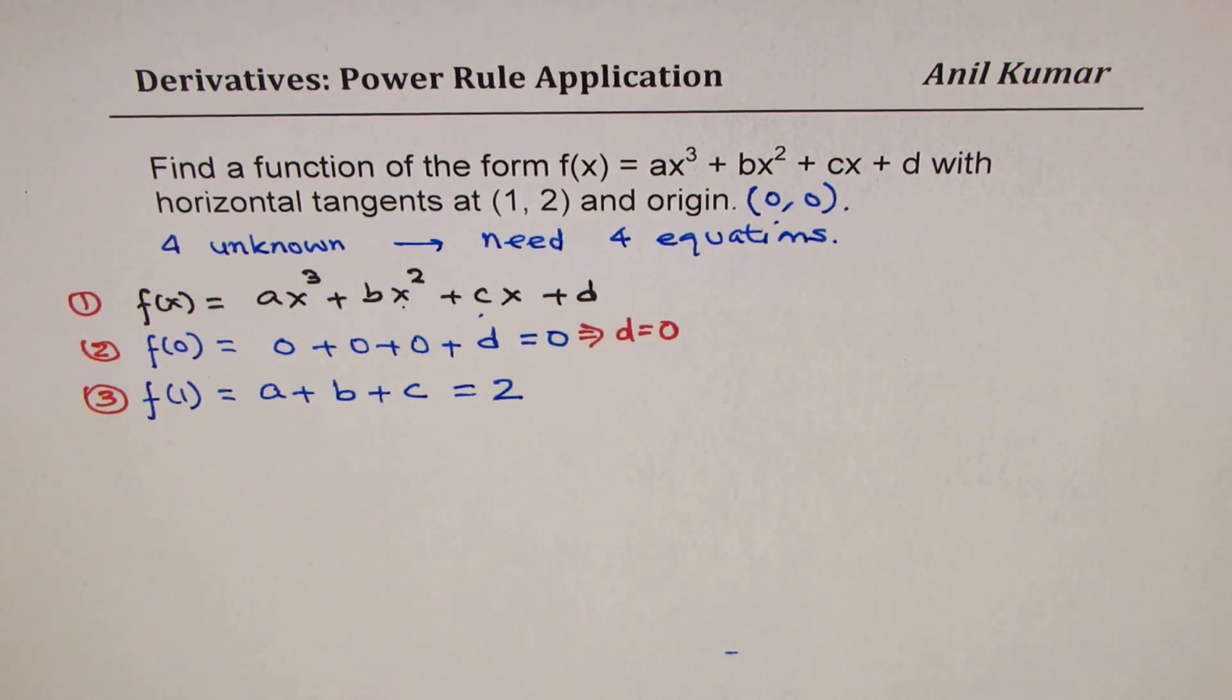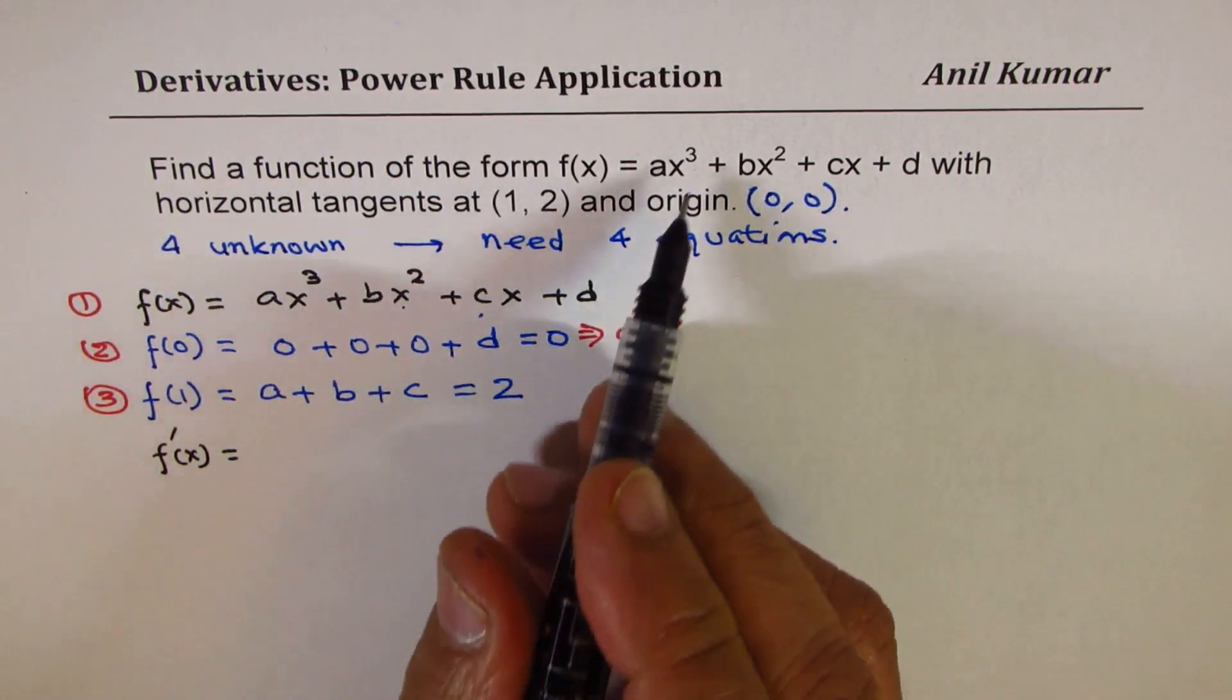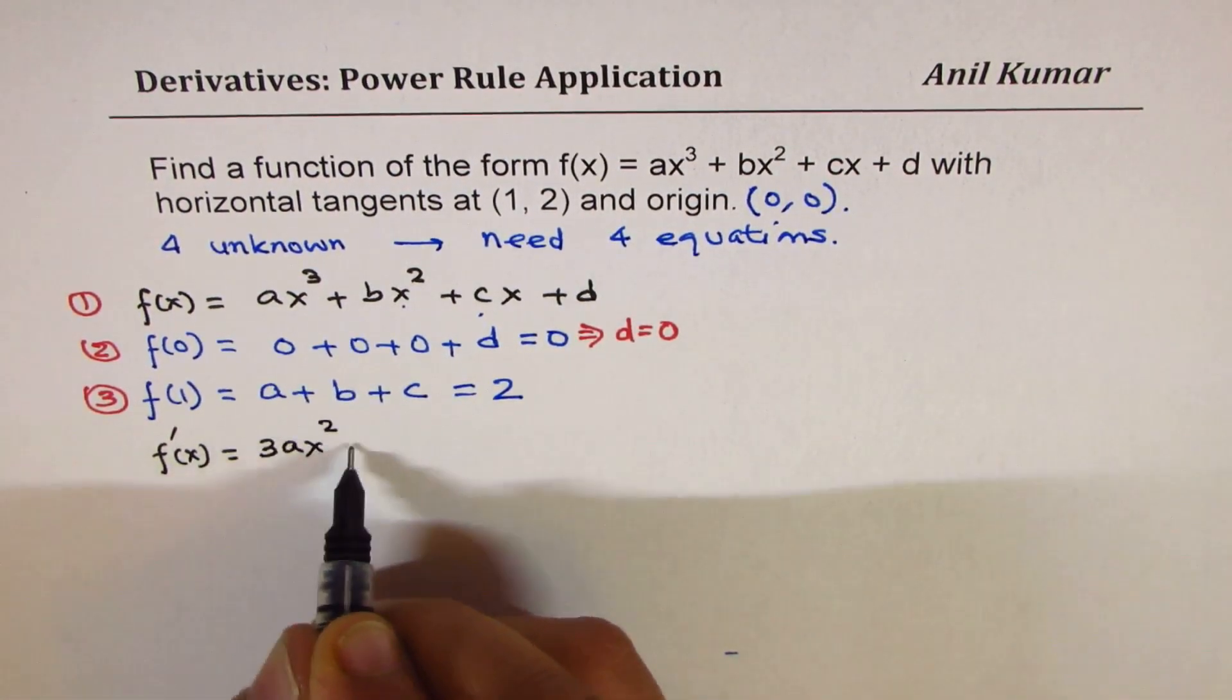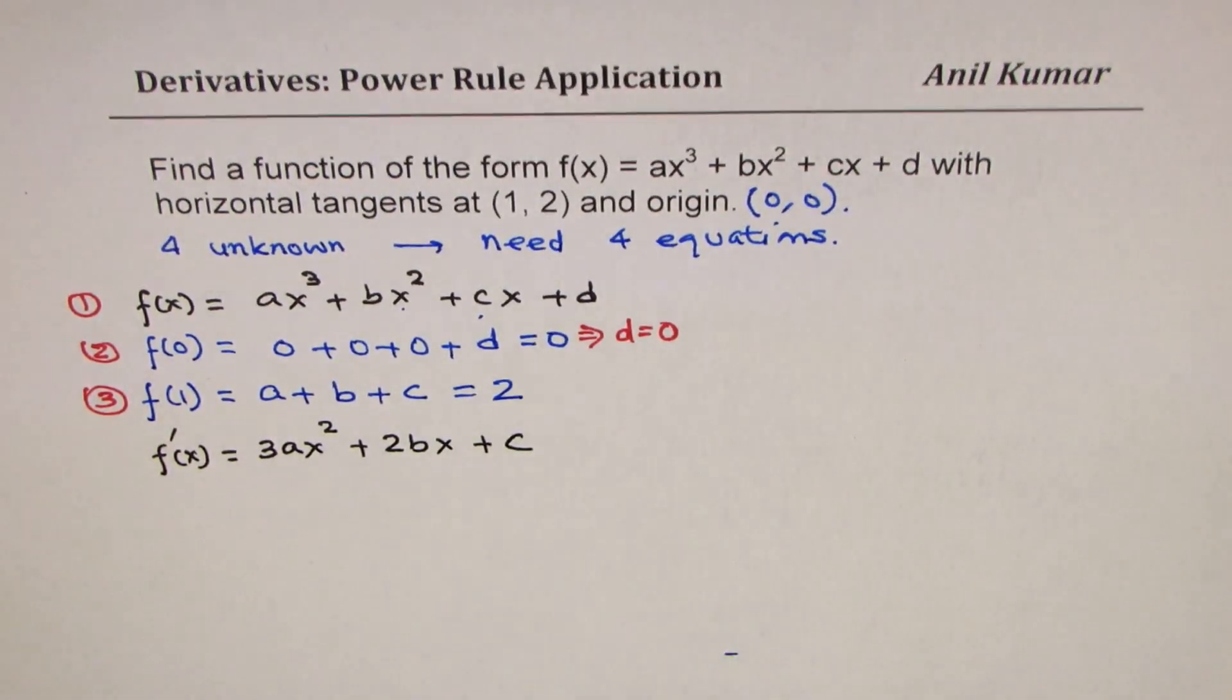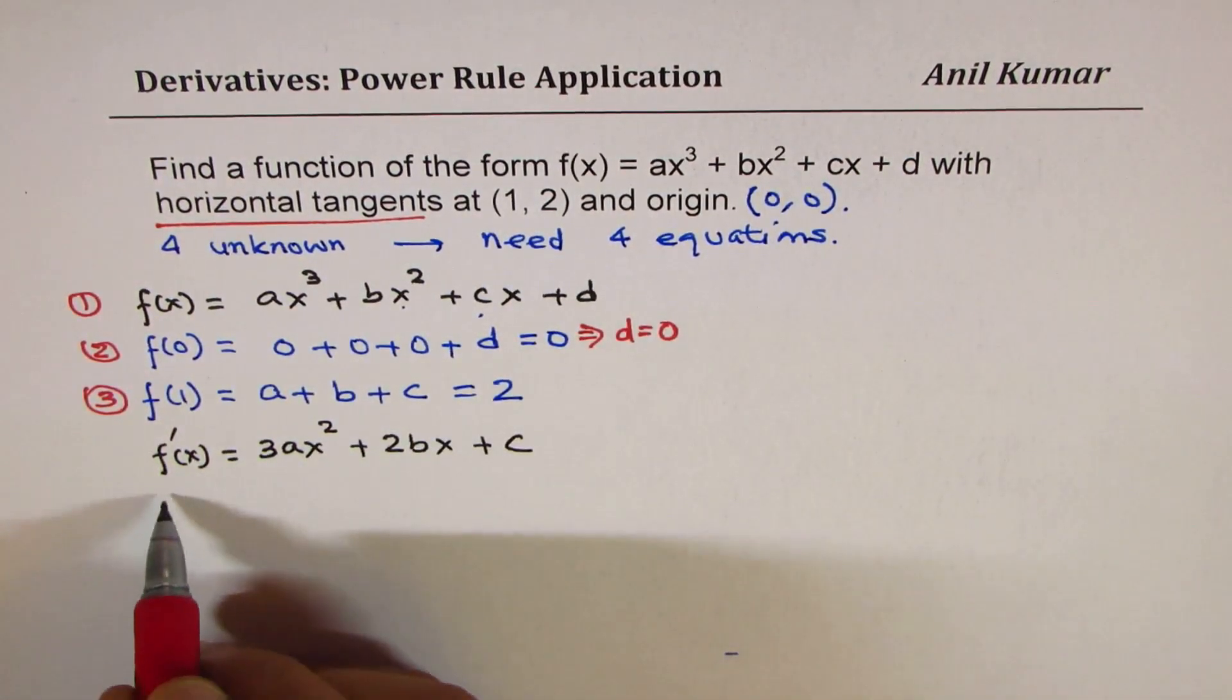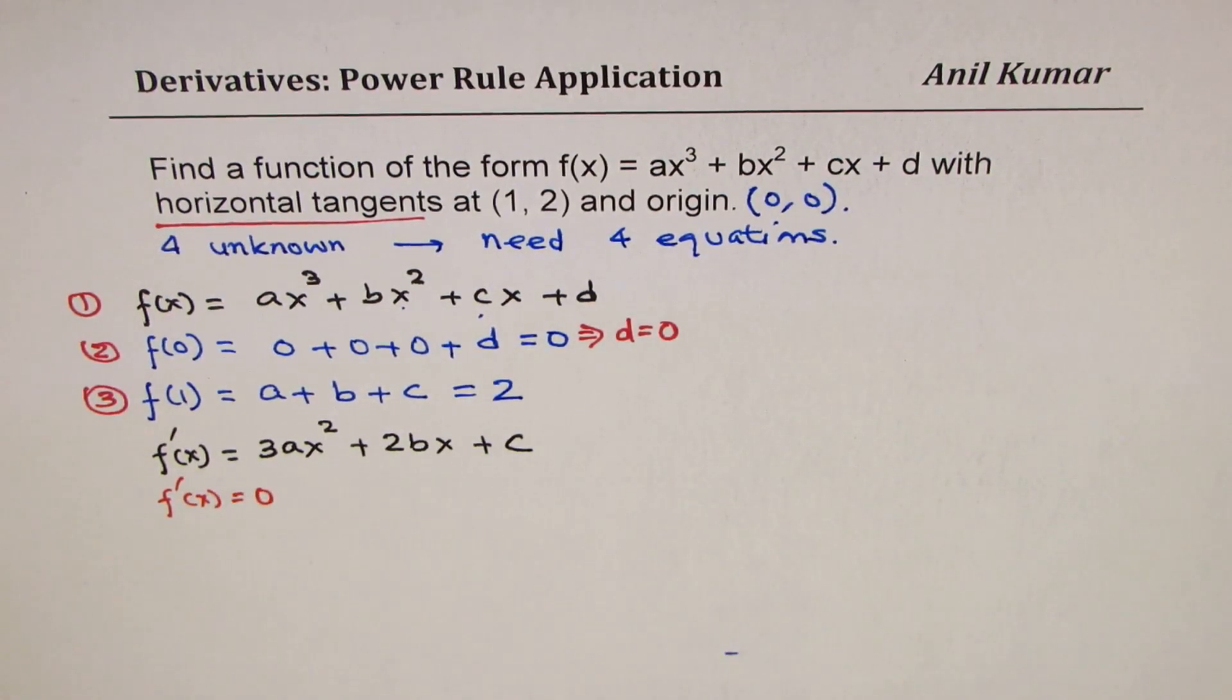Now to get the other equations, we should find the derivative. So let's find the derivative of the function, which is f prime or f dash x, which is equal to 3ax squared plus 2bx plus c. Now horizontal tangent means derivative is 0.